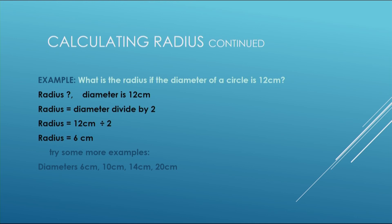You can try more examples. What if the diameter is six? Six divided by two — you get three. What about if the diameter is ten centimeters? Half of ten is five. What if the diameter is fourteen centimeters? Half of fourteen is seven centimeters. What if the diameter is twenty centimeters? The radius would be half of twenty, which is ten.